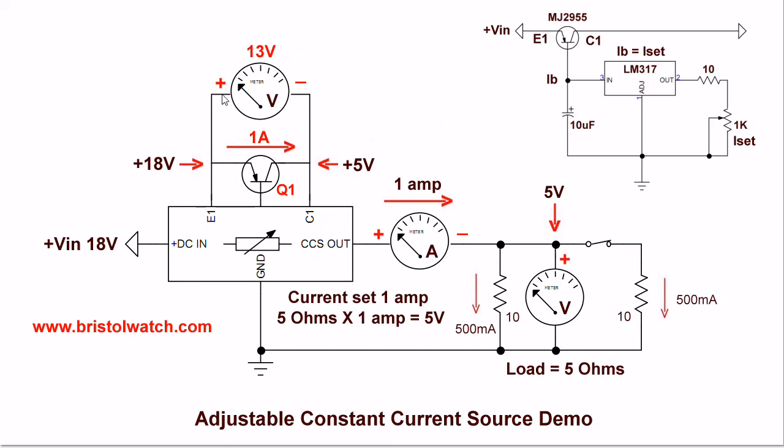Looking at this we will measure the voltage across Q1 emitter to collector. We will look at the current through Q1 through the amp meter and to the parallel connected 10 ohm resistors and the voltage across them. In this case I have adjusted my constant current source for 1 amp. What that amounts to is I have 1 amp through the pass transistor. The two parallel resistors gives me a load of 5 ohms. 5 ohms times 1 amp is 5 volts.